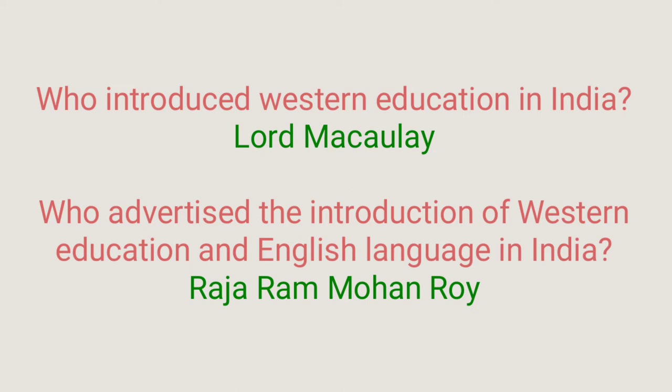Lord Macaulay introduced Western education in India. In his book 'Minute Upon Indian Education,' he opposed the publication of books in Sanskrit and Arabic. The East India Company decided to promote Western education through English because they thought people would become more rational, scientific and educated. Raja Ram Mohan Roy is also regarded as the father of modern India and is remembered as the founder of Brahma Samaj.